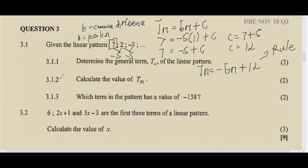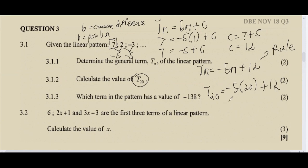Moving to 3.1.2: calculate the value of t20. Now that we have the general term it's easy — wherever we see n we substitute 20. So t20 = negative 5(20) + 12. Using a calculator: negative 100 + 12 gives us negative 88. The value in the 20th position is negative 88.